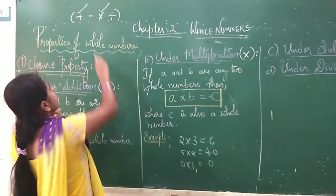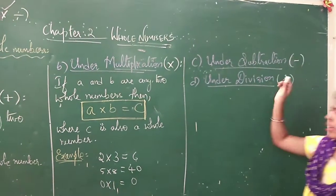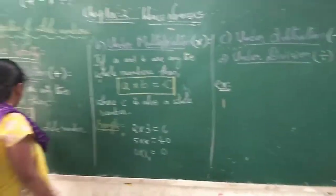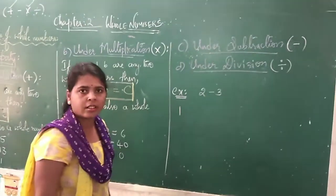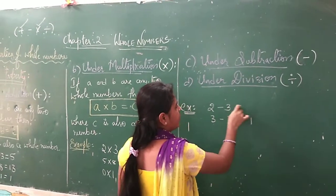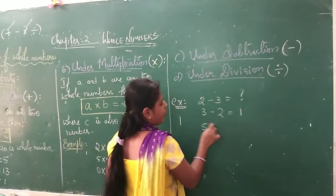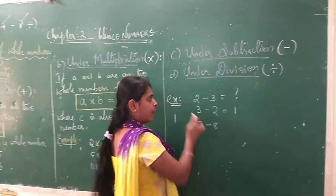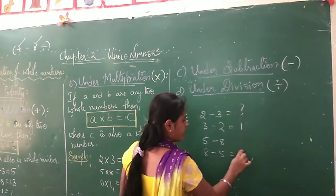Now I will go to subtraction. Closure property under subtraction — that is, minus. I am going to take the example of 2 and 3. Take 2 minus 3. Can I do this? No, I cannot. But if I do 3 minus 2, I will get 1. So 2 minus 3 I cannot do. One more example: 5 minus 8 — you cannot subtract 8 from 5. But in reverse, if you take 3 minus 2, you can do it. Same way, 8 minus 5, you can do it.